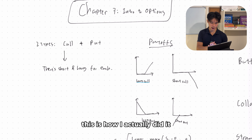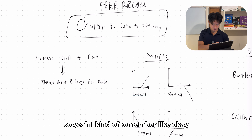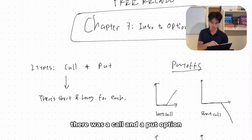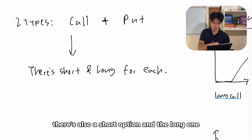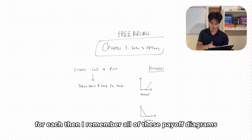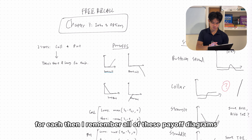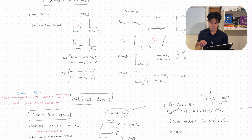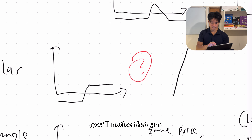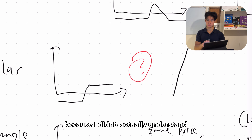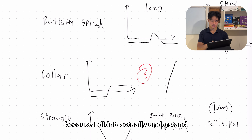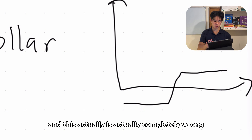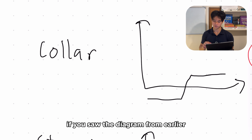So back to the free recall — this is how I actually did it. I remembered, okay, there were two types of options: the call and the put option. There's also a short option and the long one for each. Then I recalled all of these payoff diagrams and all of these other trading strategies. You'll notice that I actually wrote a question mark here because I didn't actually understand how to do this strategy, and this was actually completely wrong, as you could see from the diagram earlier.